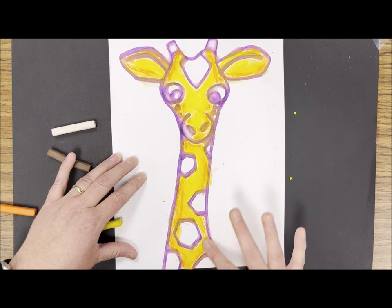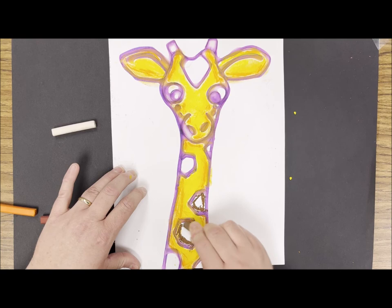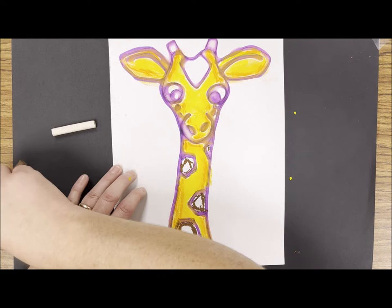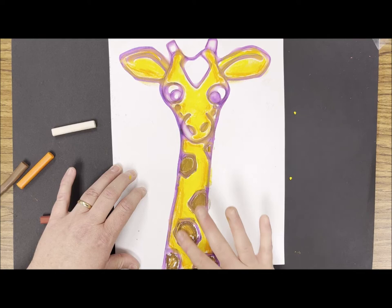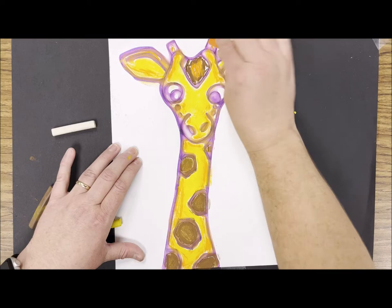Moving on to the spots, I'll outline them with brown and fill them in with a little bit of orange and again blend them together. By simply taking your finger and gently moving it over the chalk, you'll blend those colors nicely.